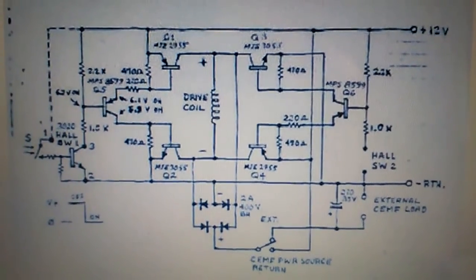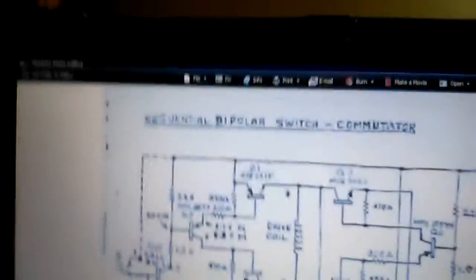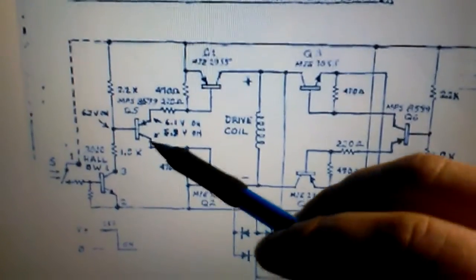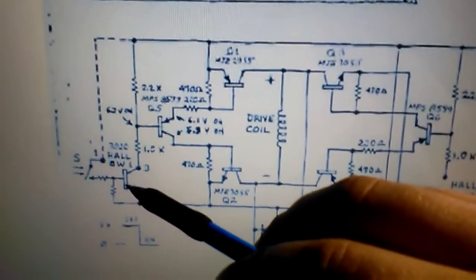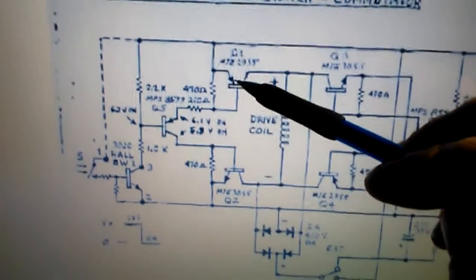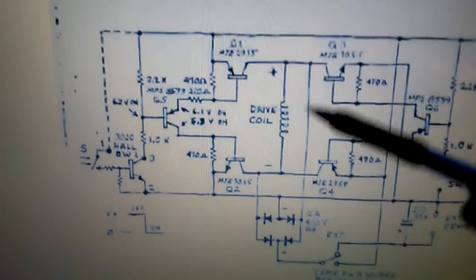So basically what this is, it's two Hall-triggered transistor switches that are wired into one. The way it works: when this Hall switch detects the south pole of a magnet, it turns on this transistor, which in turn turns on this one and this one, allowing current to flow this way.